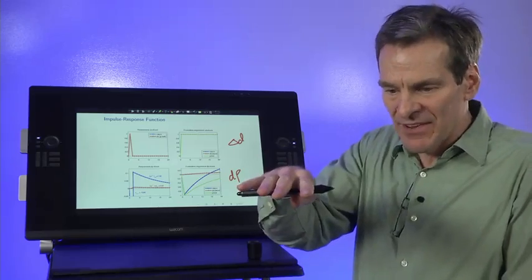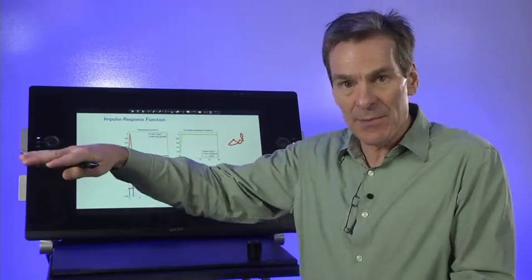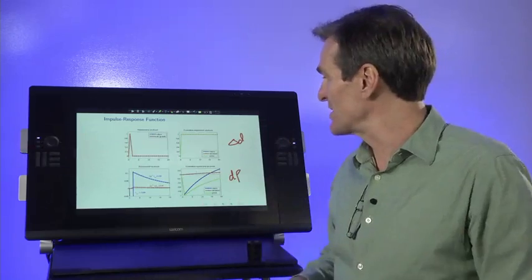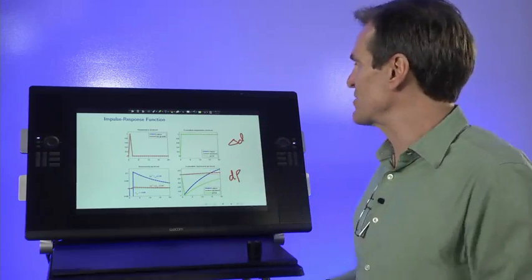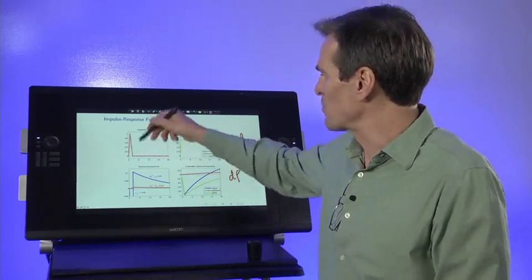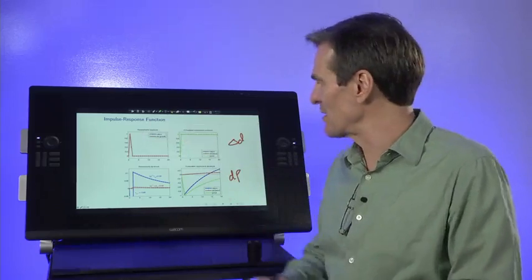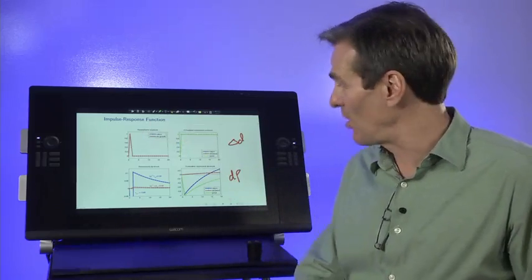So what happens in this situation? Well, if you learn that all dividends are risen and dividends are always going to be higher, then prices go up. Prices will always stay higher. The price dividend ratio doesn't change. And after this one lucky unexpected return, expected returns aren't affected at all.